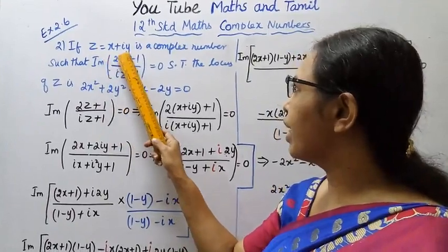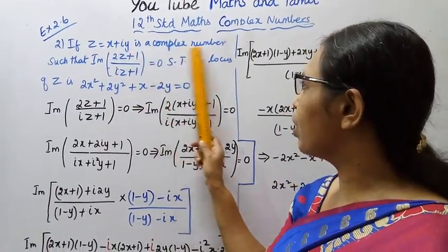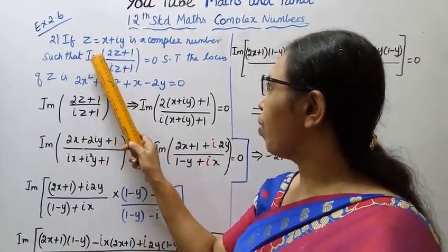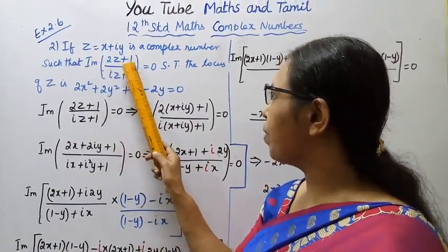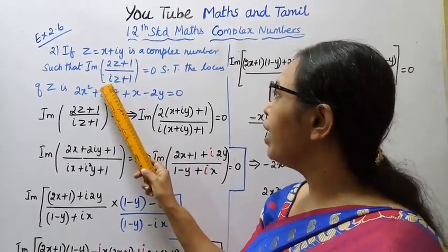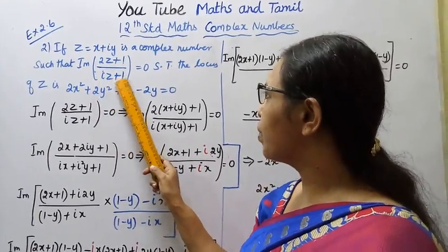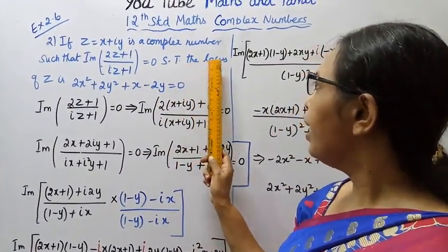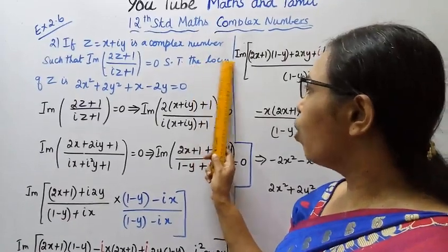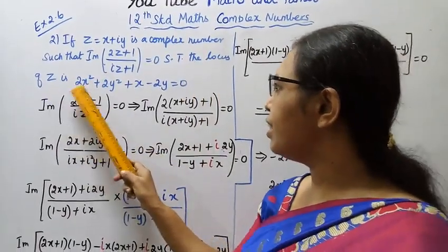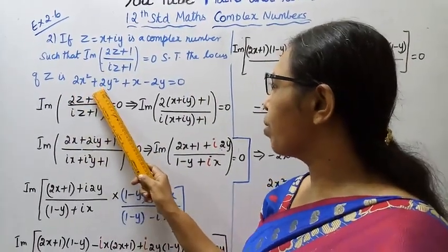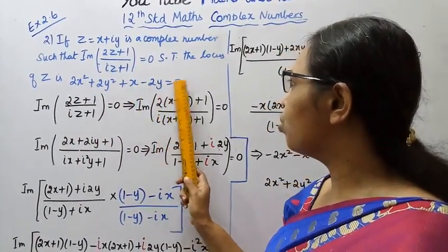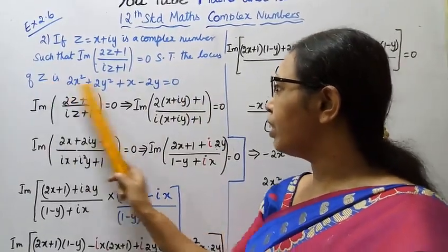If z equals x plus iy is a complex number such that the imaginary part of (2z plus 1) divided by (iz plus 1) is equal to 0, show that the locus of z is 2x squared plus 2y squared plus x minus 2y equal to 0.